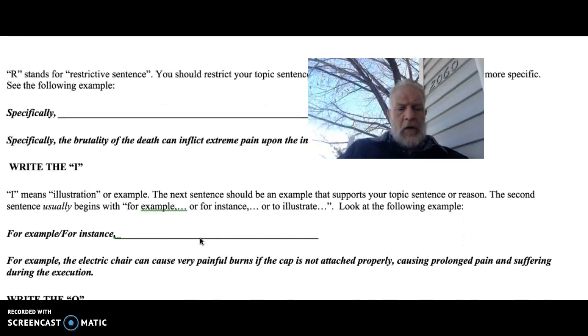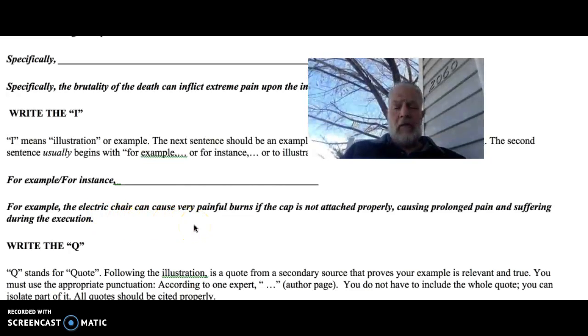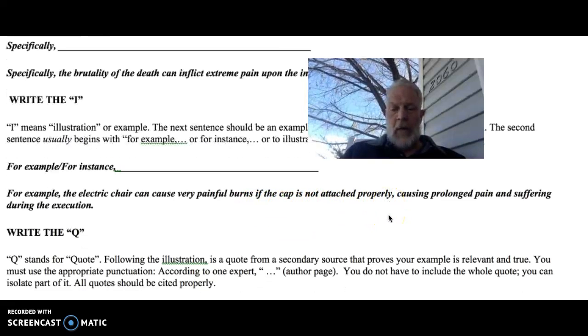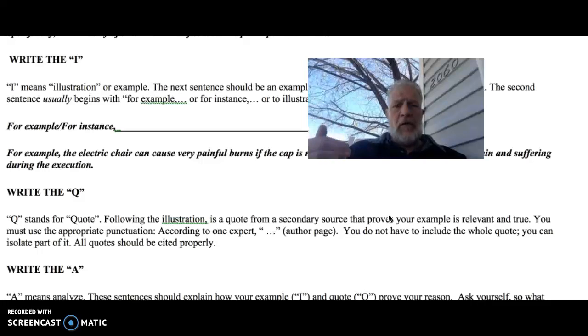The other thing that you want to do is you want to use I. It means the illustration or example. So the next sentence would be the example, and you would say something like, for example, for instance, or to illustrate. Let's take a look at what it would look like in this paragraph. For example, the electric chair can cause very painful burns if the cap is not attached properly, causing prolonged pain and suffering. Some of you might think that might be okay for somebody that gets the death penalty, but for the purposes of this discussion, that's what you would use.